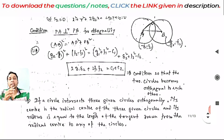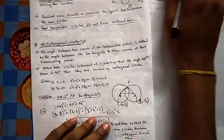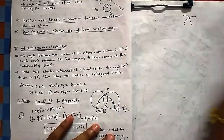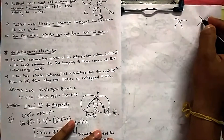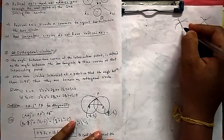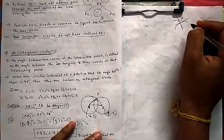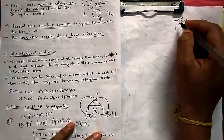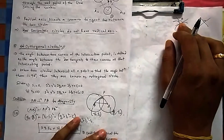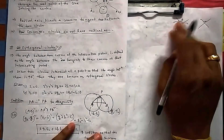What is the meaning of orthogonal circles? What is the condition of orthogonality for circles? When two curves intersect each other, to find the angle between them — unlike lines — we take the tangent to each curve at the point of intersection. The angle made by those tangents is the angle between the curves. If that angle is 90 degrees, we say the two curves are orthogonal to each other.